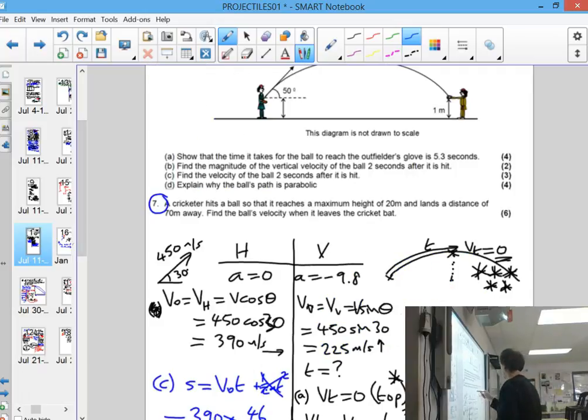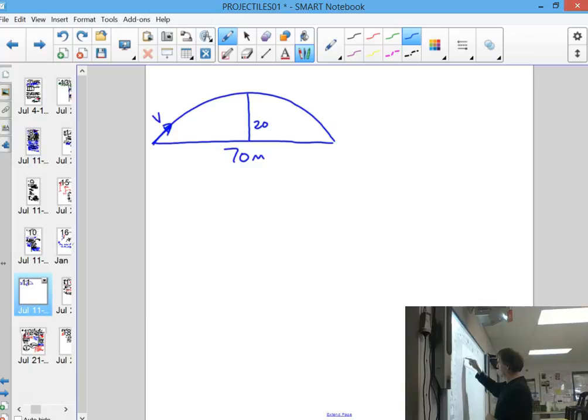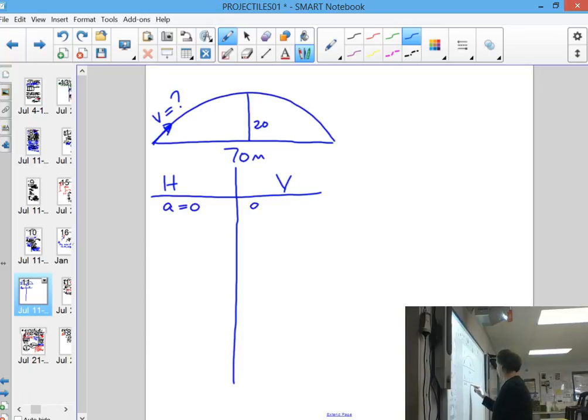Now we'll do question 7 here. A cricketer hits a ball that reaches a maximum height of 20 metres, and it lands 70 metres away. Work out what the ball's velocity was when it left the bat. So this is really hard. So we're going to find the V at the start. But if you break it down into its parts again, you just treat the routine as normal. We've got a equals zero here, a equals minus 9.8. You do not know the initial velocity, so we'll look at that for now. We do know at the top though that vertically it's going to stop at some point.